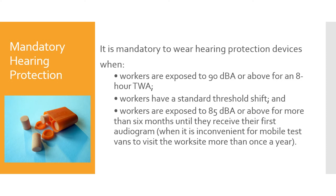It is mandatory to wear hearing protection devices when workers are exposed to 90 decibels or above for an eight-hour shift TWA. Workers have a standard threshold shift, meaning their hearing shifts and they don't hear as well as they used to. Workers exposed to 85 decibels or above for more than six months must wear hearing protection until they receive their first audiogram. It is inconvenient for mobile test vans to visit the work site more than once a year, so these are the times when mandatory hearing protection kicks in in the United States.